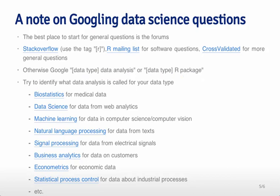Another thing to keep in mind is that data analysis or data science is often called something different depending on the kind of data you're looking at. For example, with medical data it might be called biostatistics; for web data, data science; for computer vision data, machine learning; or natural language processing for text data. Knowing the right word to Google is often half the battle, and you can find that out by posting to the forums where people will let you know the right term to search.